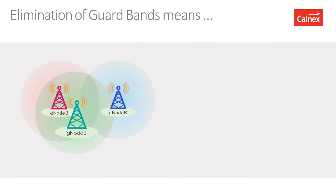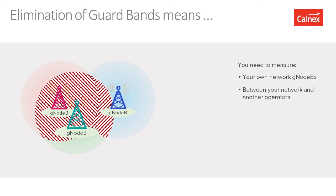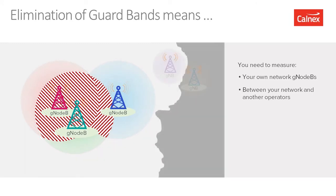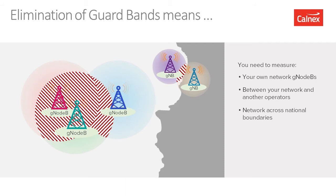With multiple networks in the same country or across borders potentially interfering with each other, it is now vital for network operators to measure signals from their own gNodeBs, as well as from adjacent or overlapping networks. This includes networks across national boundaries where signals spill over. The only practical way to measure someone else's network or a network across a boundary is to measure the synchronization of that signal over the air.